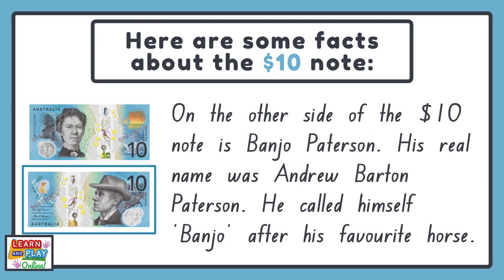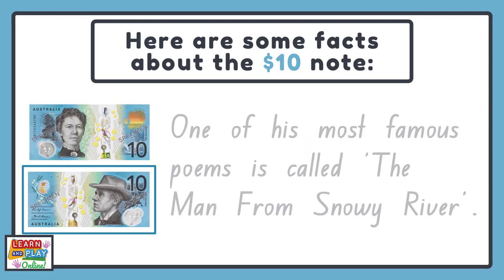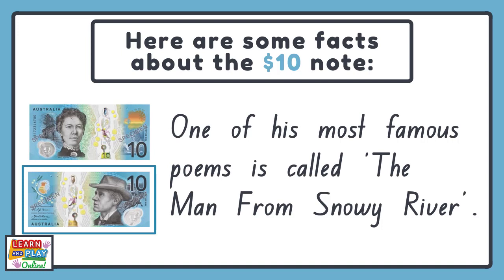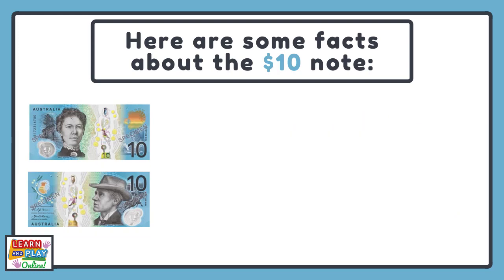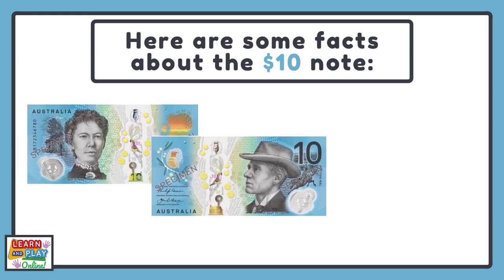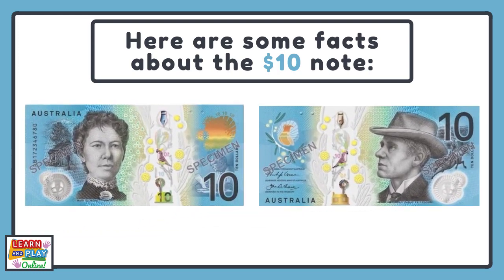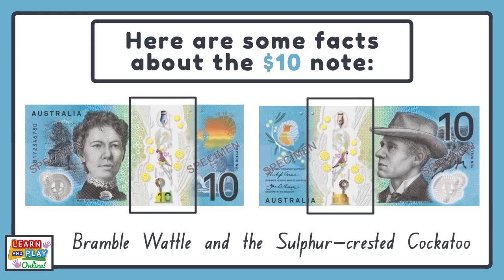On the other side of the $10 note is Banjo Patterson. His real name was Andrew Barton Patterson. He called himself Banjo after his favourite horse. One of his most famous poems is called The Man from Snowy River. The native wattle and bird that you will find on the $10 note is the Bramble Wattle and the Sulphur-Crested Cockatoo.